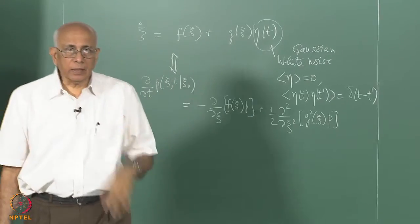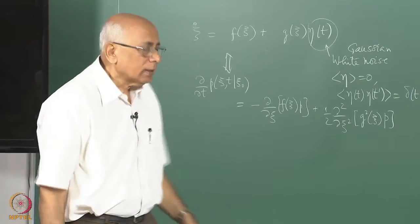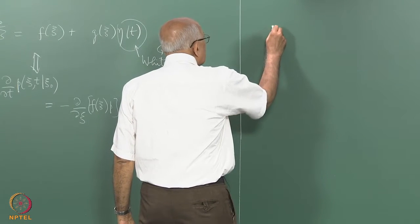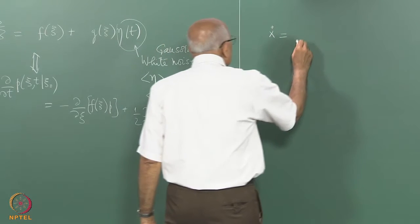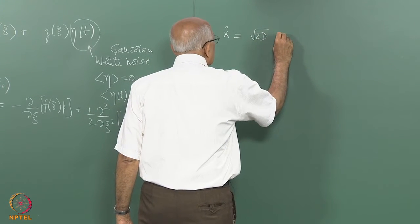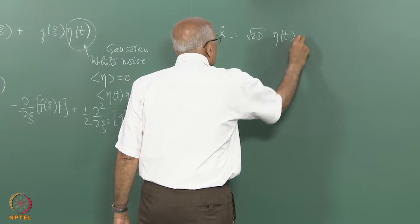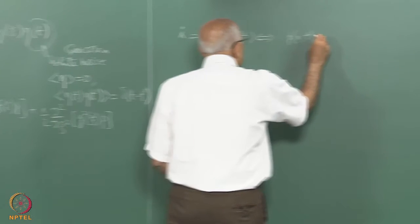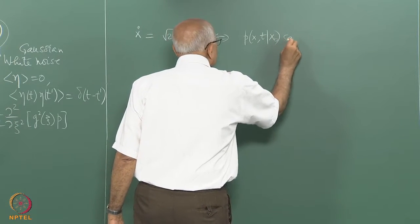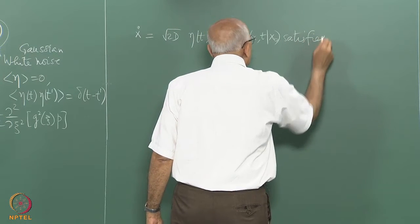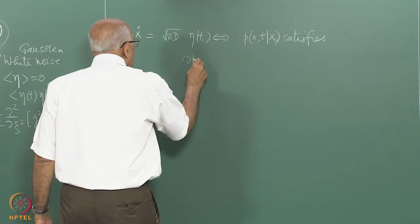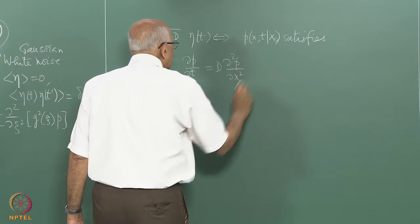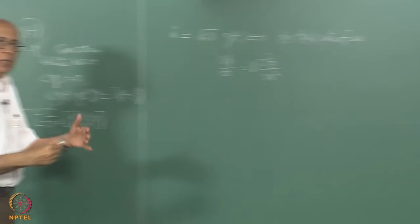The simplest example: if the position of a particle undergoing diffusion on a line satisfies x-dot = sqrt(2D) eta(t), this immediately implies that p(x, t | x_0) satisfies the diffusion equation: delta p / delta t = D d^2p/dx^2. That was the correspondence we had made.